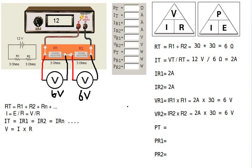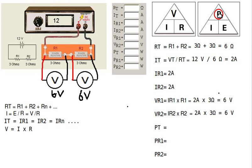Now the last thing to calculate is power. The general formula for power uses our memory aid: cover up P and that gives us I times E. So power equals I times E — or P equals I times E. This is the general formula for power, and we want to find the power of R1, the power of R2, and the total power.